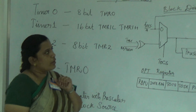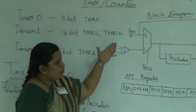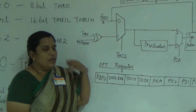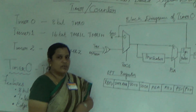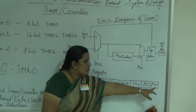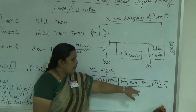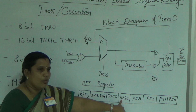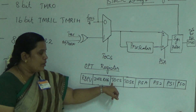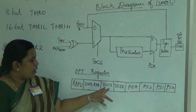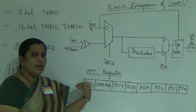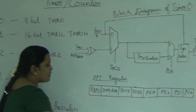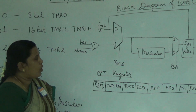For the block diagram of Timer 0, we need to know the required registers. The main register is the option register, which is 8-bit. It contains PS0, PS1, PS2, and PSA bits, which are used to select the pre-scaler. Timer 0 also uses bits to select the edge, select the clock pulse, and the internal register. Port B resistor is also needed for external clock pulses.